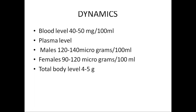Dynamics: the normal level of iron in the blood is 40 to 50 mg per 100 ml. Plasma levels are 120 to 140 mg per 100 ml in males and 90 to 120 mg per 100 ml in females. The total body level of iron is 4 to 5 g. Of this, 65% is in the form of hemoglobin, 4% is myoglobin, and 1% is various heme compounds. 0.1% is bound with transferrin in the plasma, and almost 15 to 30% is stored in the liver and the reticuloendothelial system in ferritin form. This is the most important storage function of the liver.